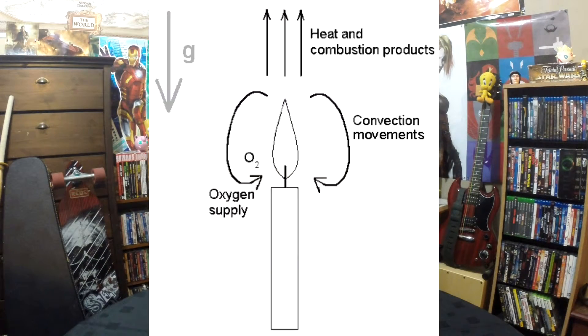Today we are talking about space and microgravity, specifically relating to convection currents. For those who are unsure of what convection currents are, it's the effect that air of different temperatures creates when it's in a gravitational field. You can see in this diagram that the candle heats the air, causing it to rise and sucking in cool air to fill that empty space. This is a convection current.